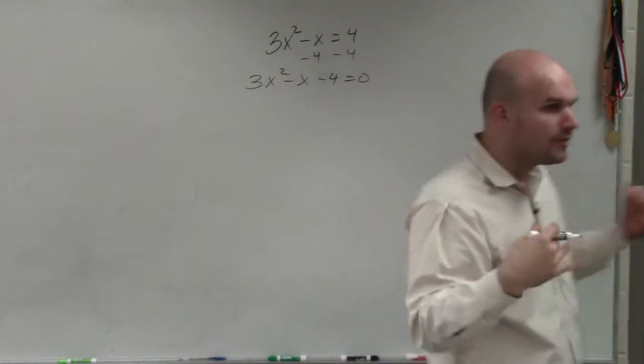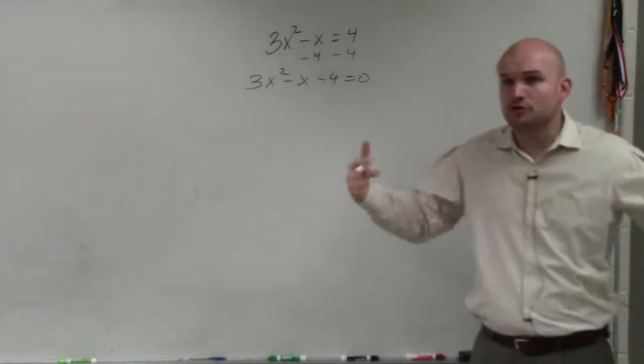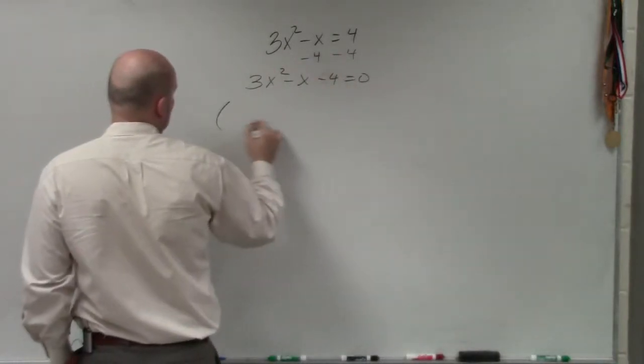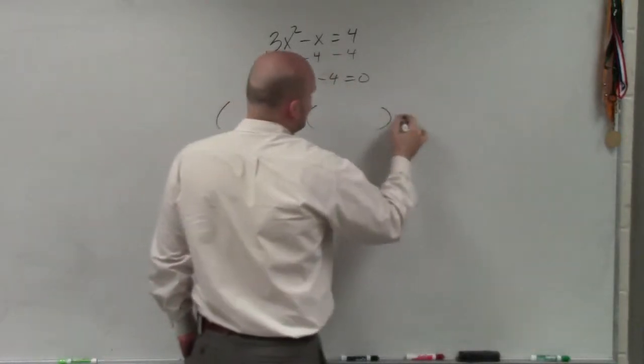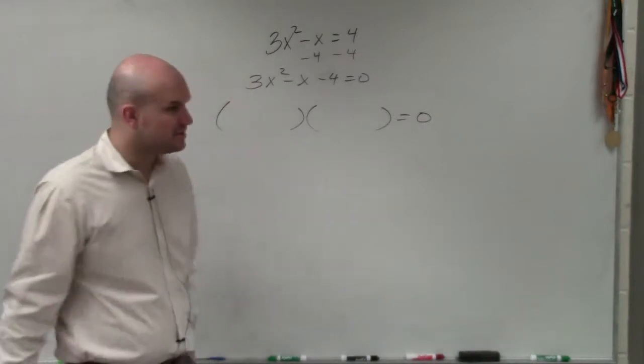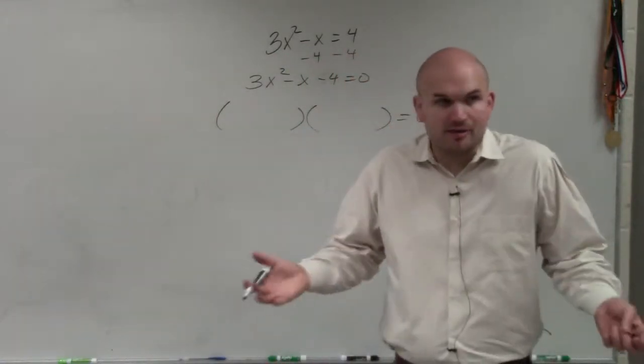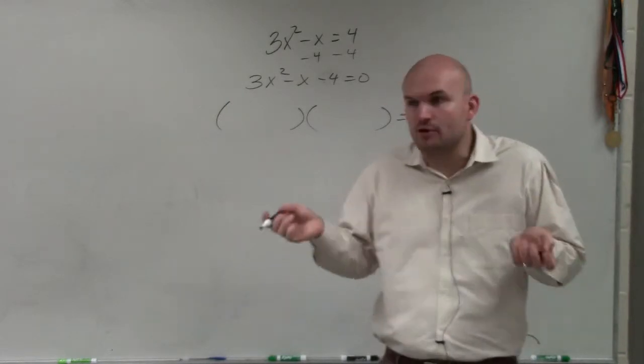Now, hopefully what I want you guys to understand is through your experience, when we're factoring these trinomials, we always had a binomial times a binomial equal to zero. Does everybody agree with that? We always had a binomial. If we had factored trinomials, we had a binomial times a binomial.